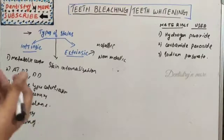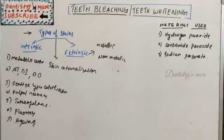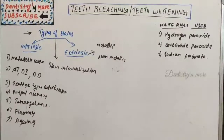Bleaching is contraindicated in sensitive teeth, severe attrition, abrasion, erosion, or abfraction; teeth with cracks; hypoplastic or severely undermined enamel; extensive restoration; discoloration in the gray, blue-gray, or black range; discoloration by metallic salts such as silver amalgam; enlarged pulp chamber; and in pregnant or nursing patients, particularly those with a reported history of peroxide allergy.